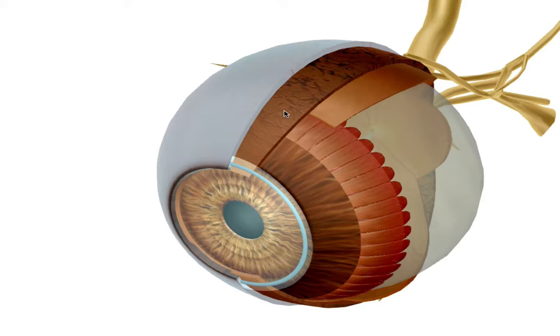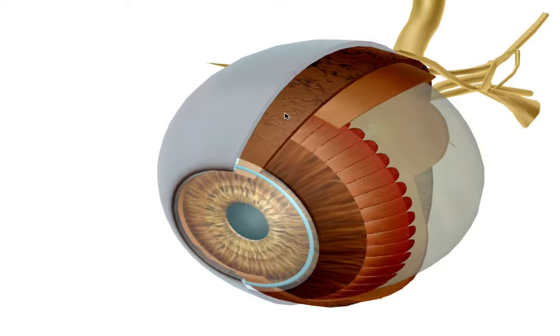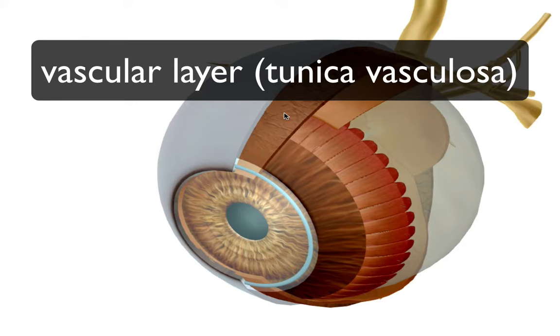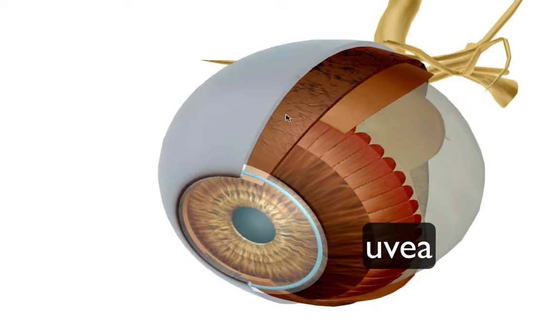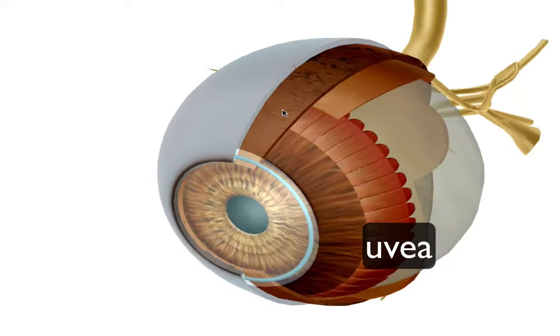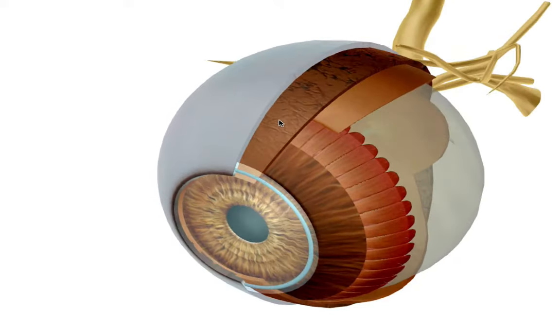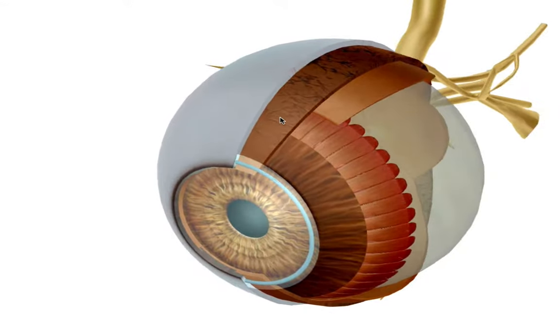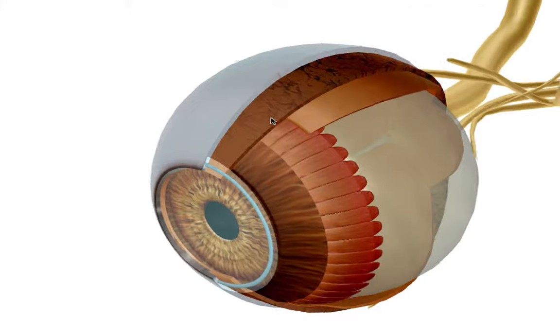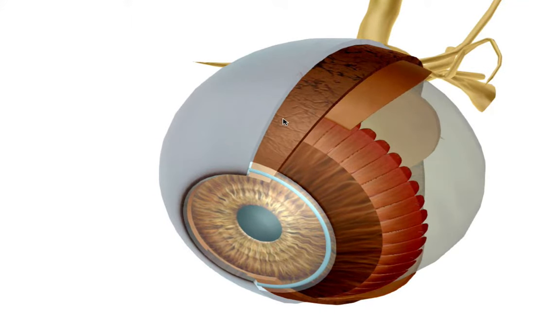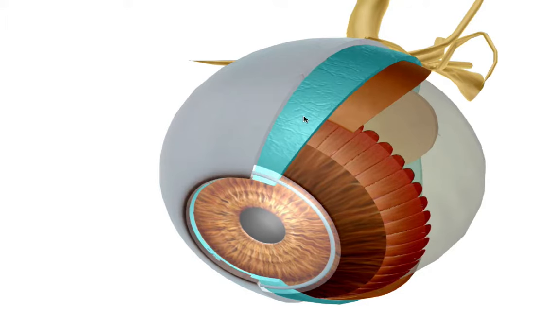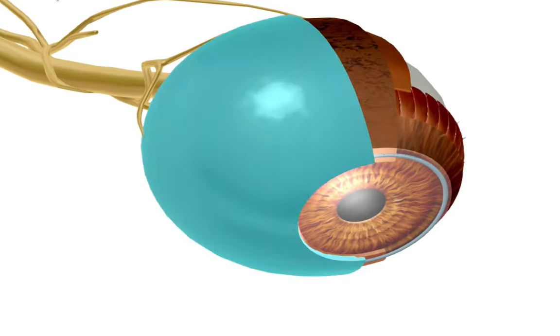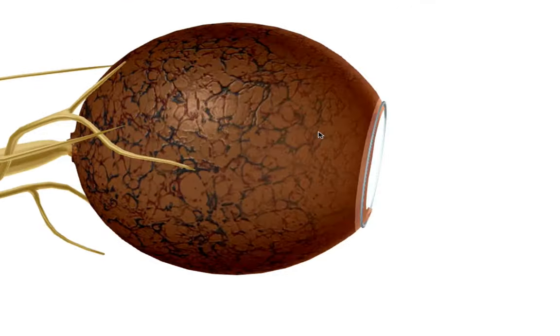And now our second layer, our vascular layer, or our vascular layer, tunica vasculosa. This is also called the uvea. For those of you who speak Spanish, uvea may sound like the word uva, which is Spanish for grape. The reason why it has that Latin name also is because when you dissect it and you peel it, it has a grape-like look to it. So our vascular or our middle layer. I'm going to remove our sclera here so we can get a better look at this. That's much better.